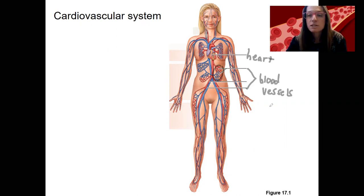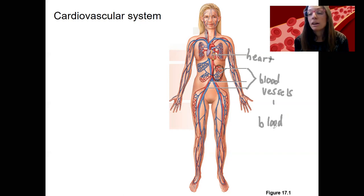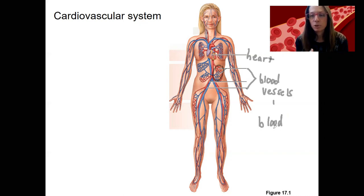The blood vessels are going to carry blood. So the heart pumps blood throughout the blood vessels, and these three components need to work together to provide nutrients and transport wastes to and from around the body. Blood pressure has to be maintained in order to transport all these nutrients and wastes.